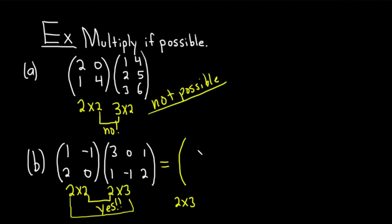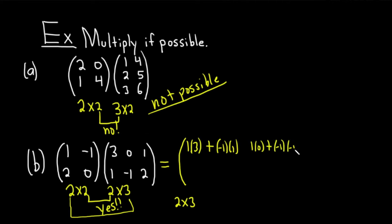To find the entry in the first row, first column, you take the first row of the left matrix and the first column of the right matrix: 1 times 3 plus negative 1 times 1. For the first row, second column, you use the first row and second column: 1 times 0 plus negative 1 times negative 1. For the first row, third column: 1 times 1 plus negative 1 times 2.